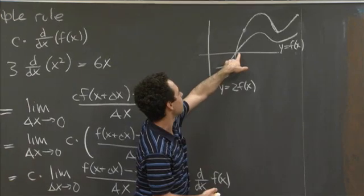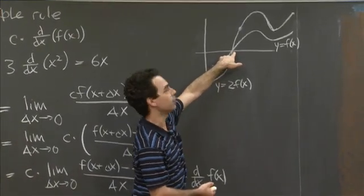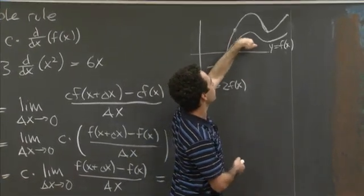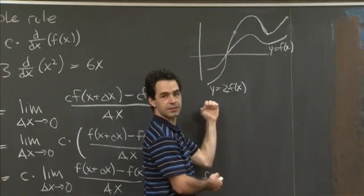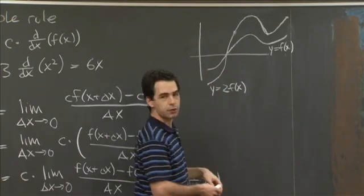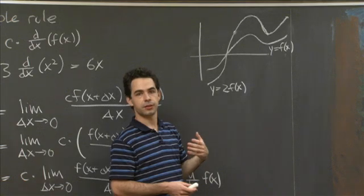If it passed through 0 before, it still passes through 0. But everywhere else, if it was above 0, it's now twice as high. If it was below 0, it's now twice as low.